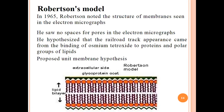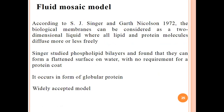In 1965, Robertson proposed another structure for plasma membrane using electron micrographs. He saw no space for pores in the electron micrographs and claimed that the railroad-track appearance came from the binding of osmium tetroxide to proteins and polar groups of lipids. He proposed the unit membrane hypothesis. Unlike the Davson-Danielli sandwich model, Robertson's unit membrane model claimed there is no space between pores, with a lipid bilayer and a glycoprotein coat on the upper side.